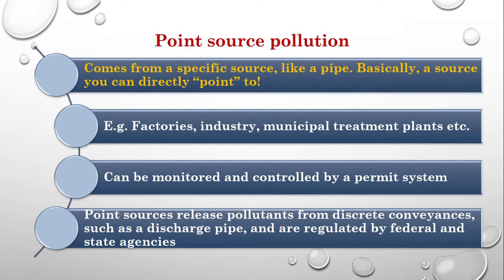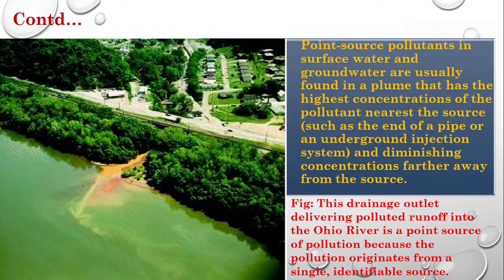Because we know the exact source, we can control it. Point source pollutants in surface water and groundwater are usually found in a plume that has the highest concentration of the pollutant near the source — such as the end of a pipe or an underground injection system — and diminishing concentration farther away from the source.